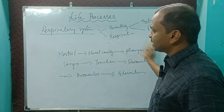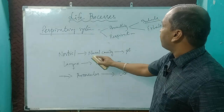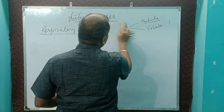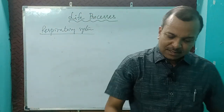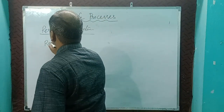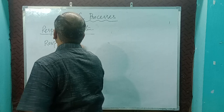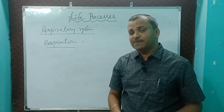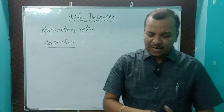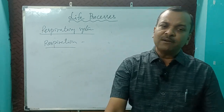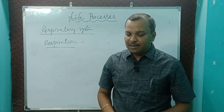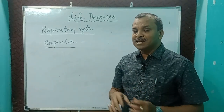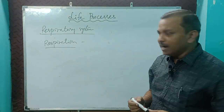This is the total process of the breathing pathway. Next is respiration — the second part of the respiratory system. Respiration is what happens when digested food is converted to energy. This process of converting digested food to energy is called respiration. Respiration is of two types: aerobic and anaerobic.